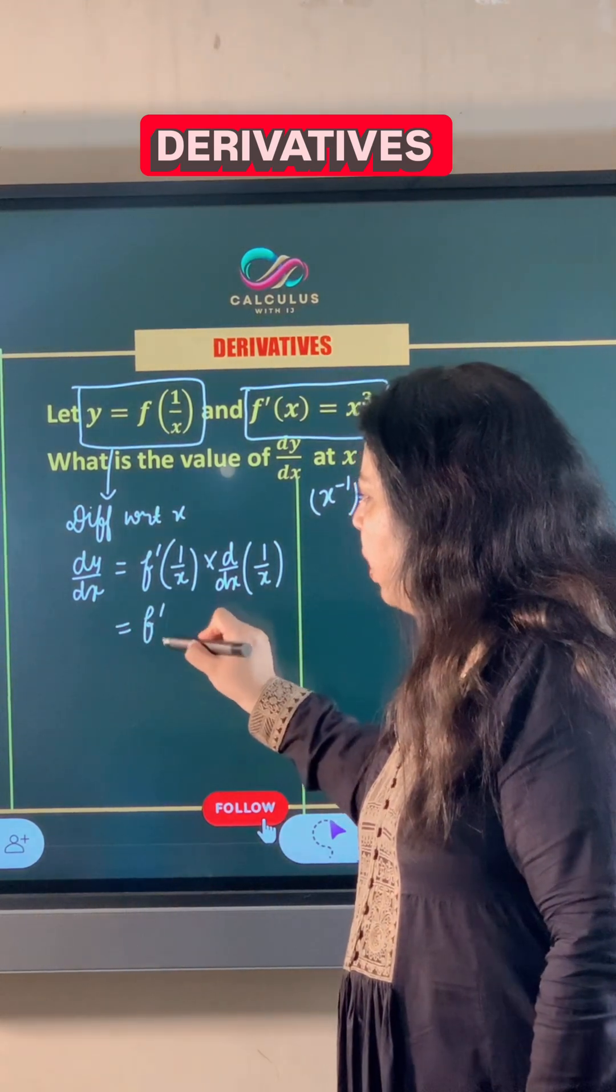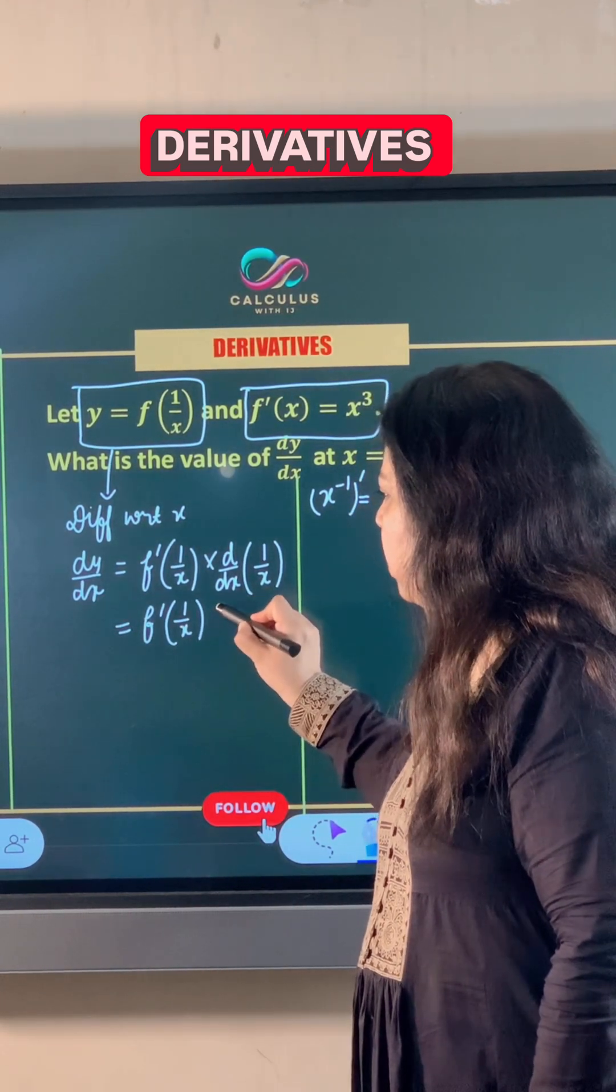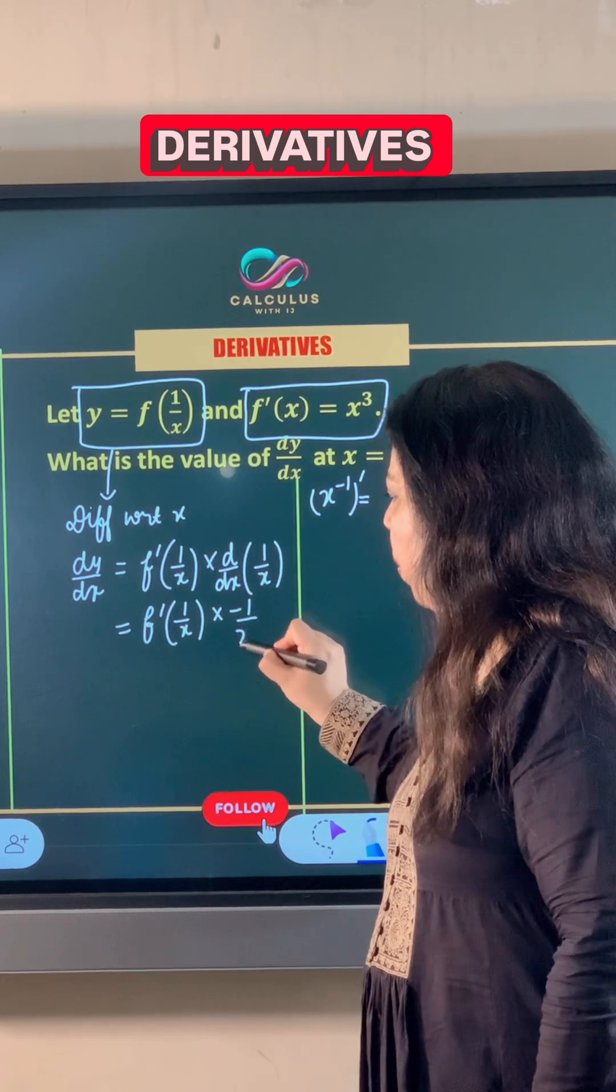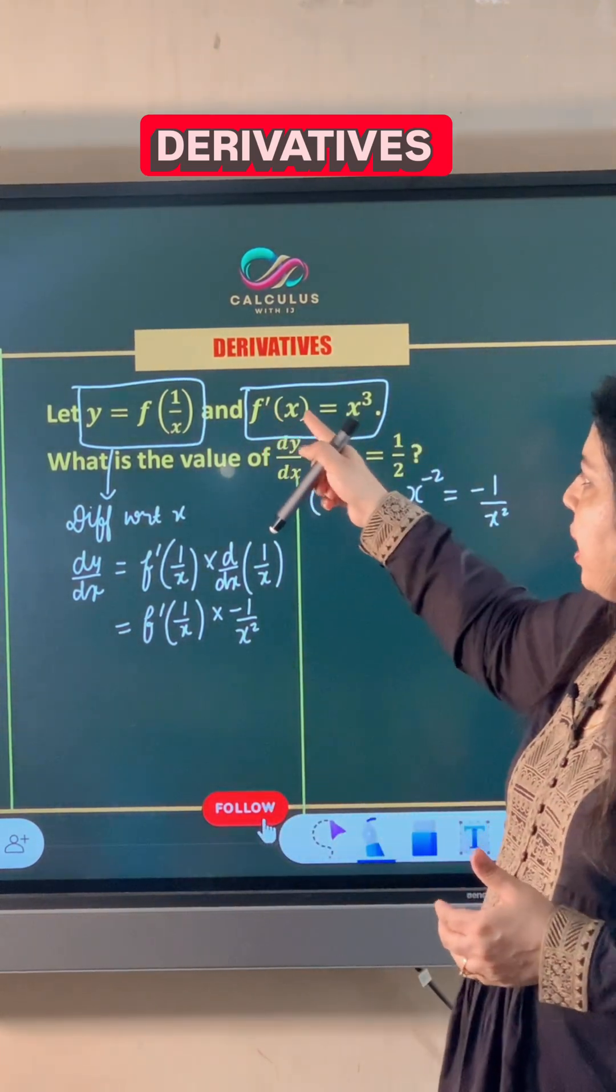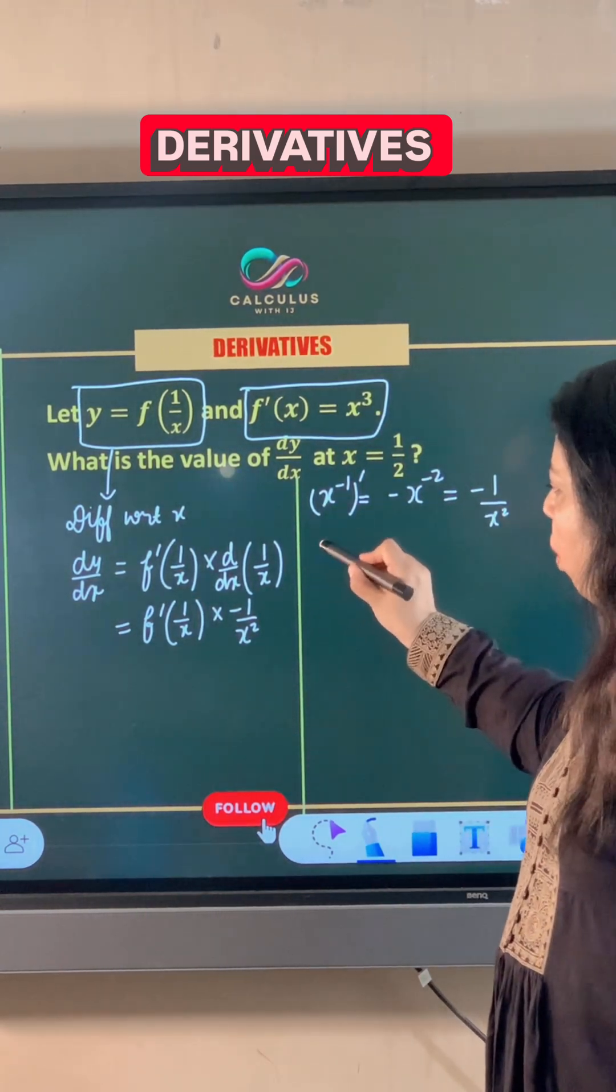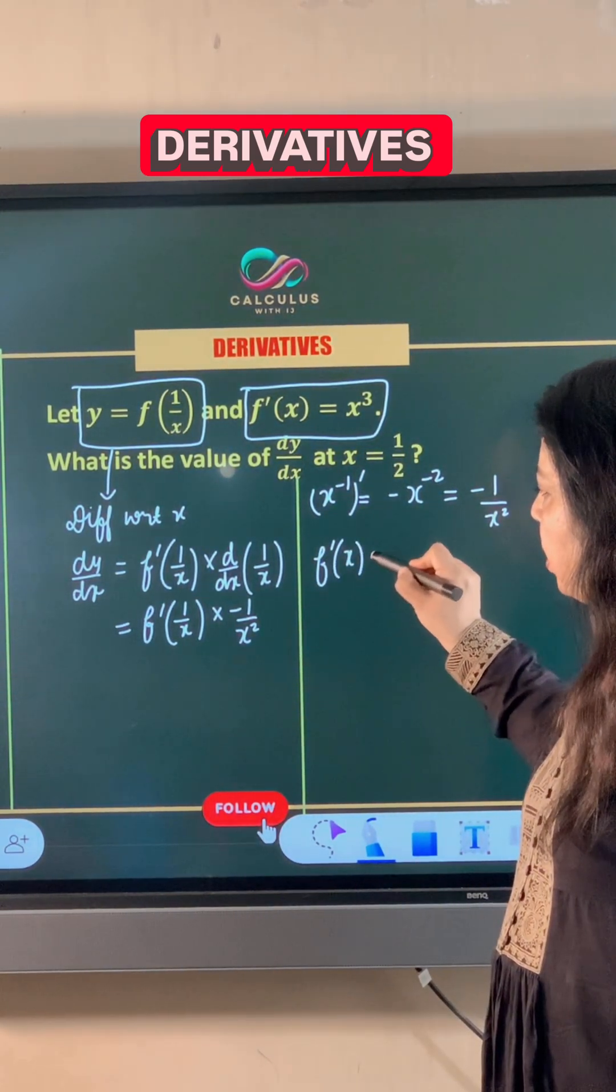So this becomes f dash of 1/x multiplied by minus 1 divided by x squared. Now, f dash x is given as x cubed.